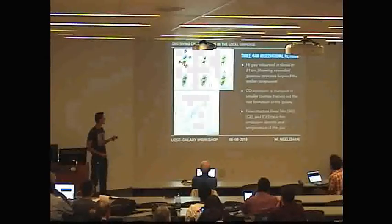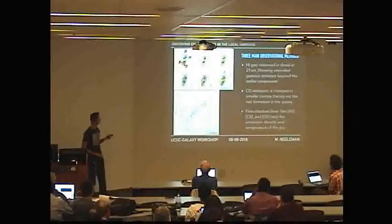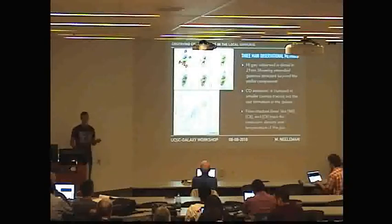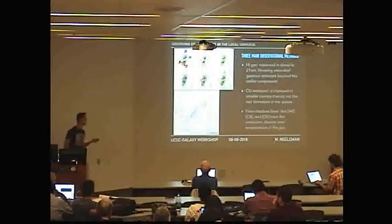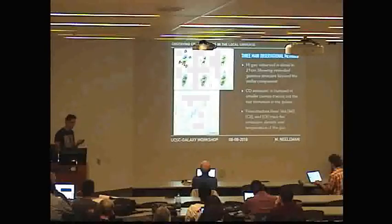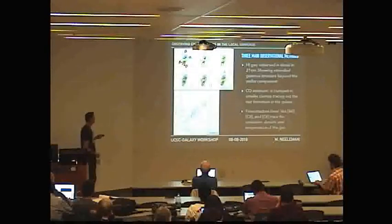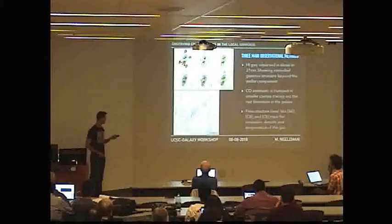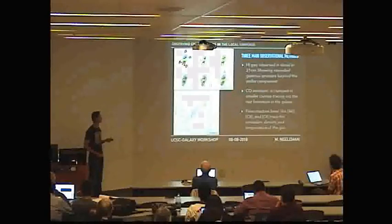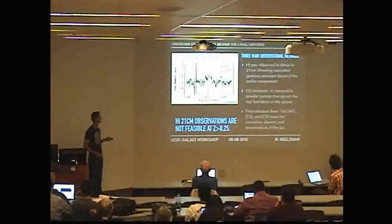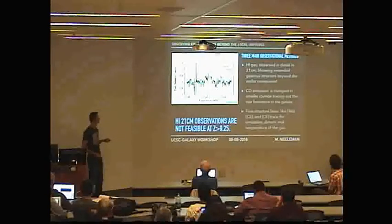Here's one example: the Herschel KINGFISH project. Herschel provided a nice way of looking at some of these galaxies. There are all different kinds of ionization structure lines, and from the ratio of these lines you can get the density and temperature of the gas.